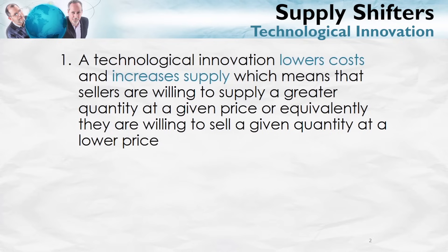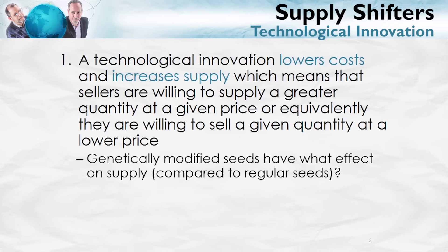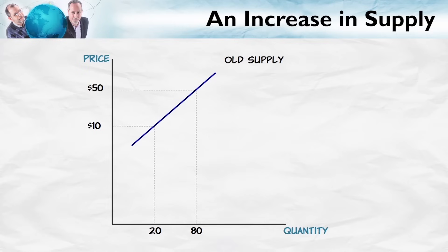A technological innovation lowers costs and therefore increases supply. That means sellers are willing to supply a greater quantity at a given price, or equivalently, they're willing to sell a given quantity at a lower price. So let's imagine we have some genetically modified seeds that require less fertilizer. Let's graph out what the effect of this innovation would be on supply. Here's our old supply curve with the old seeds — now we have the innovation, genetically modified seeds which require less fertilizer and create a reduction in cost.